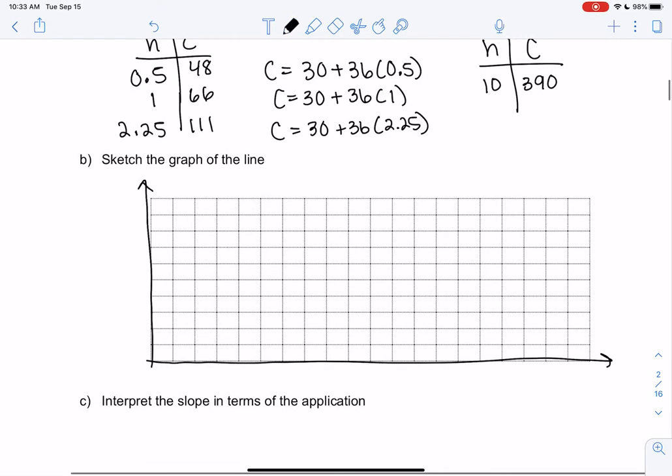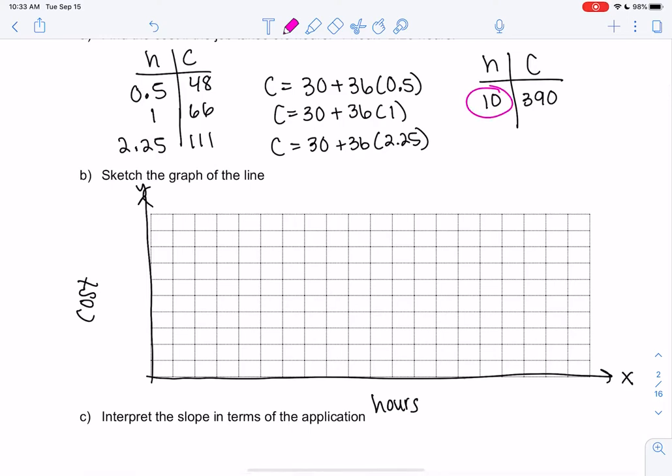So X always goes on the bottom and Y goes up and down. So in this case, hours will be on the bottom and cost will go up and down. If we want to think of a scale, I think I have 20 boxes in this direction. So the scale for H, 10 is the largest. So we'll do 20 over 10, which is 2. Oh, sorry. I'm doing that backwards. Long day. 10 over 20, right? We did boxes on the bottom. So we can count by halves.